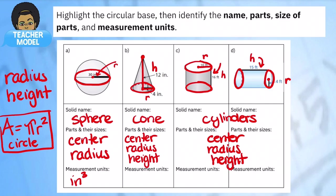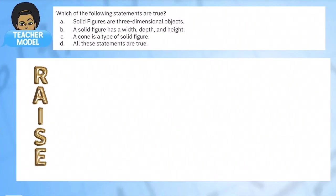For both cylinders and cones you have a center, a radius, and a height. Don't get confused if the shape is moved side to side or tilted over. And don't forget — units for volume are always to the third power, so make sure to add those to your final answers.